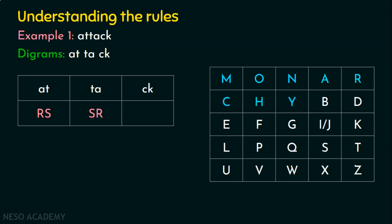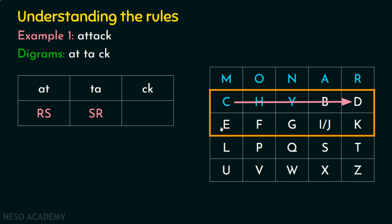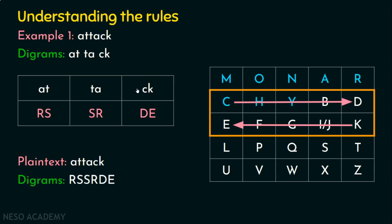Let's take the third digram, CK. C is here and K is here, so we create a rectangle. As per the rule, C is encrypted as D and K is encrypted as E. So the ciphertext for CK is DE. Therefore, the plaintext 'attack' produces the ciphertext RSSRDE.